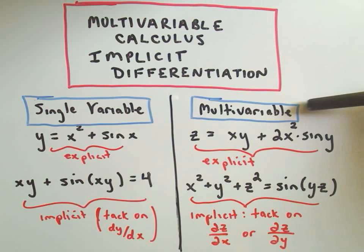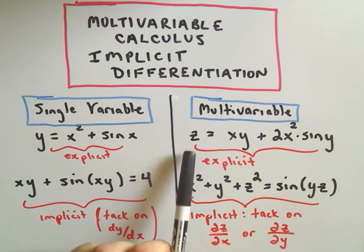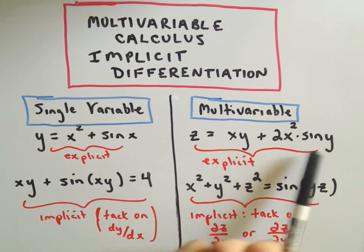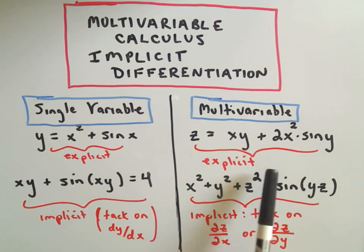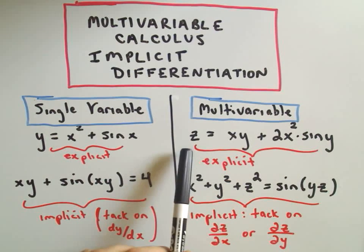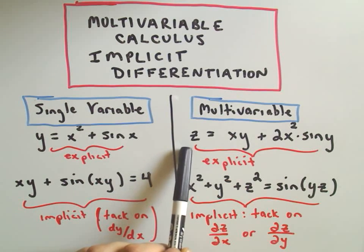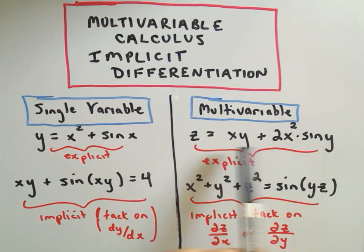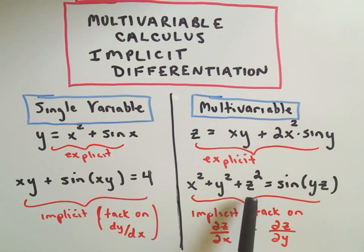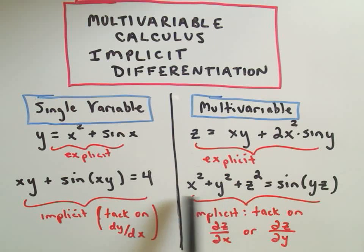Going to be the same thing for multivariable calculus. Now z is our dependent variable, and x's and y's are our independent variables. So this is considered explicit because the dependent variable is all by himself and everybody else is having a party on the other side. The bottom right equation is considered implicit because now, again, z, which is our dependent variable, he's mingling with the x's and the y's on the same side of the equation.